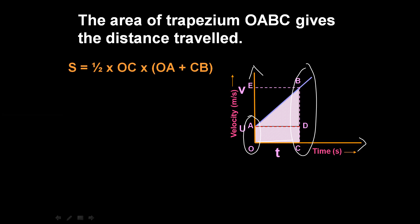Half into OC into (OA plus CB). OC is the measurement of time. OA is the initial velocity U, and CB is the final velocity V. So the expression becomes: half into T into (U plus V).